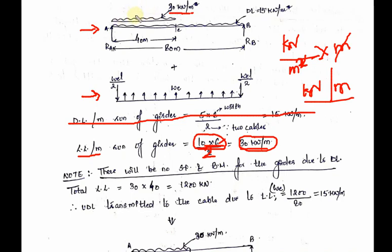This UDL is acting in the downward direction, therefore the support reactions RA and RB due to this external load will act in the upward direction. In the second part, the equivalent UDL is acting in the upward direction, so the support reactions due to this equivalent UDL will act in the downward direction. Whenever a UDL acts throughout the span, the support reactions are half of the total load. So the total load in the upward direction will be We times L, and We·L/2 will be the support reactions acting in the downward direction, since We is acting upward. The value of L is 80.